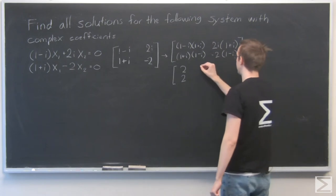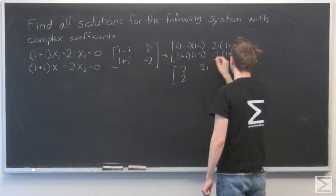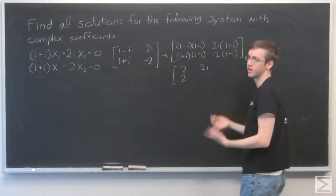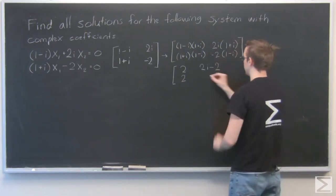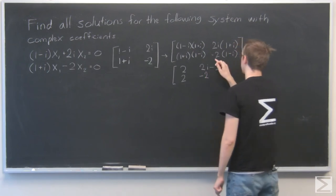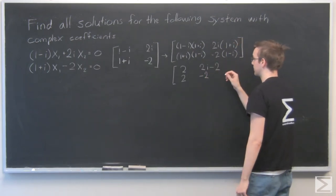Here, 2i times 1, 2i plus 2i times i. And i times i is negative 1, so minus 2. And this is minus 2 times 1, and minus 2 times minus i, that's positive 2i.